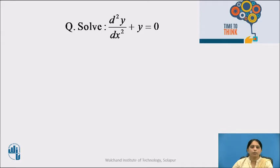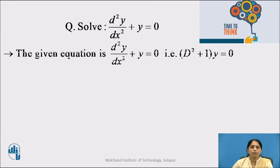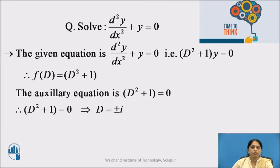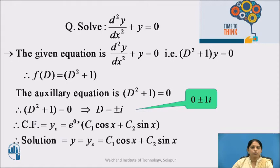I hope all of you have solved the example, please check the answer. The equation is (D² + 1)y = 0, therefore f(D) is D² + 1 and the auxiliary equation is D² + 1 = 0, which gives D = ±i, complex and distinct roots. This can be written as 0 ± 1i. Therefore the complementary function is e^(0x) into [c1 cos x + c2 sin x], so the solution is y = c1 cos x + c2 sin x.